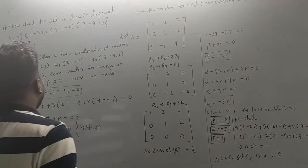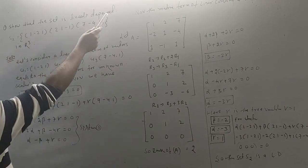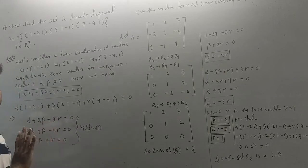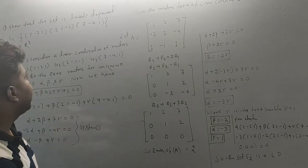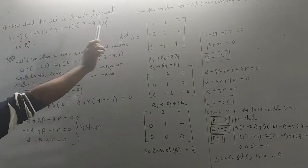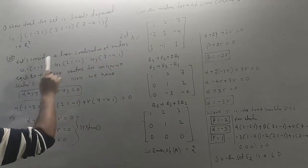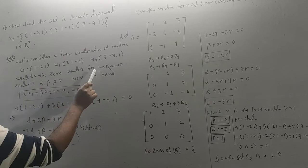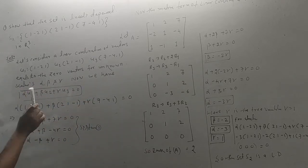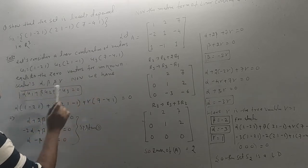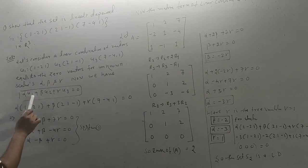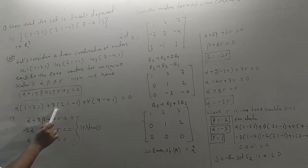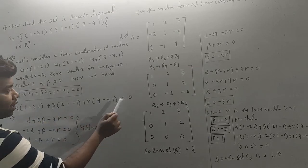Next example: we have another set that is linearly dependent. Using the same approach, let us consider the linear combination of vectors U1, U2, U3 equal to zero. The unknown scalars are alpha, beta, gamma. The formula is: alpha·U1 + beta·U2 + gamma·U3 = 0, which gives alpha into U1 plus beta into U2 plus gamma into U3 equals zero.